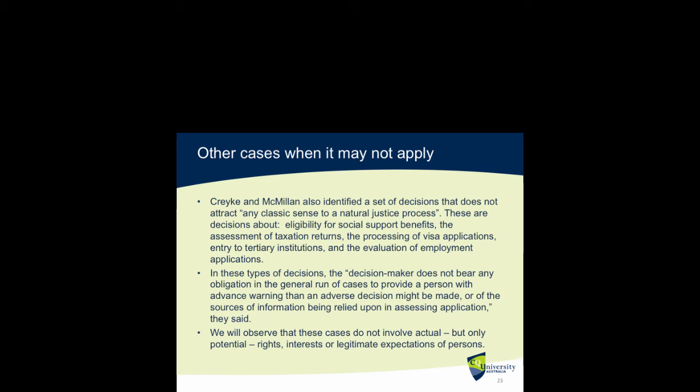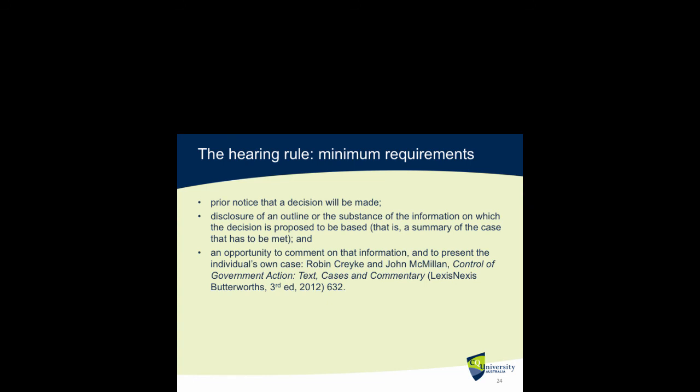Now let's talk about the hearing rule — what are the minimum requirements? There are three. First, there must be prior notice that a decision will be made. Second, there must be disclosure of an outline or the substance of the information on which the decision is proposed to be based — that is, a summary of the case that has to be met. Third, there must be an opportunity to comment on that information and to present the individual's own case.